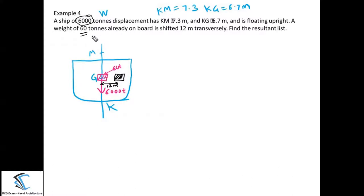Let us assume the 60-ton cargo was initially kept at the location of the center of gravity. This is the appropriate position to assume. Now, we are moving that cargo transversely towards the starboard side at 12 meters from the center line. So the new position of the cargo is 12 meters toward starboard.